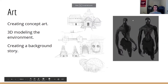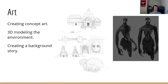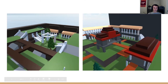We have three people working on the game, not including our professor. One person is working on art — their job is to create concept art, 3D model the environment, and create a background story, which is not usually the artist's job, but since we're such a small team, that's their role. Here are some pictures of the arenas we've been working on. They're very simple and blocky right now, but once we decide on a layout, they'll get more complex and nice looking.